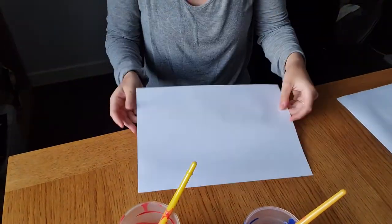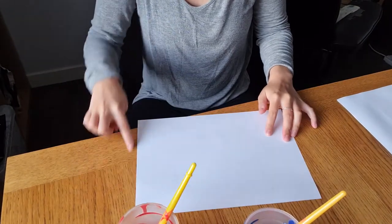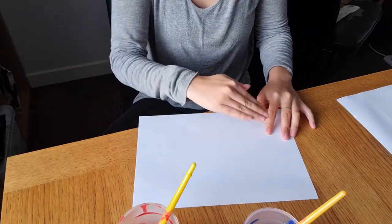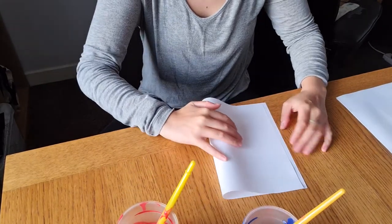We're going to use this paper and we're going to fold it in half. Take this side and fold it right over until it touches the other side, and then press down the middle. Two corners touching, two corners in the middle, and fold it down.